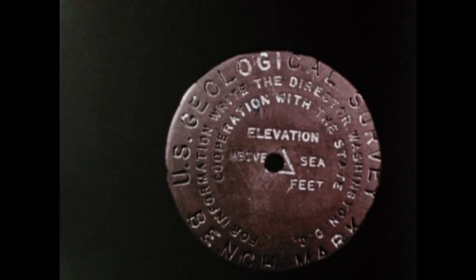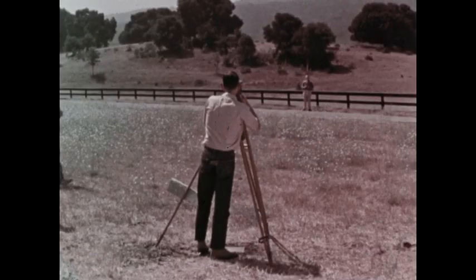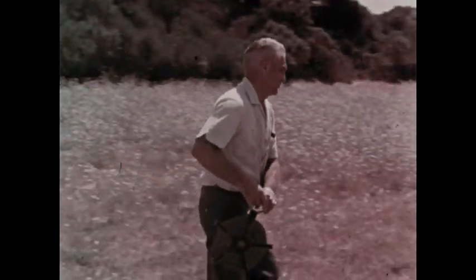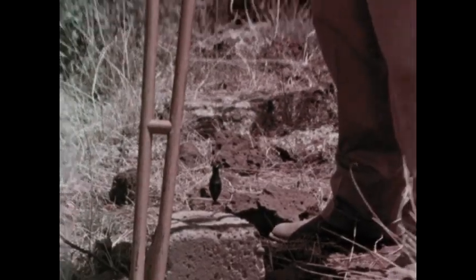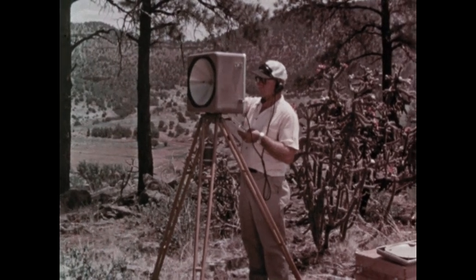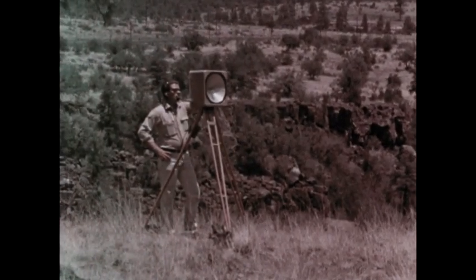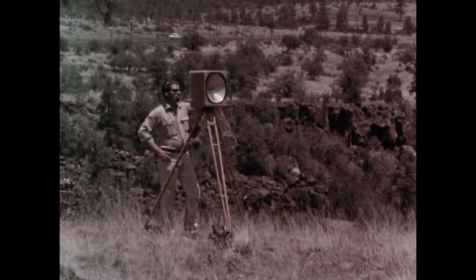The surveyor centers his instrument precisely over one of these known marks. From there, the distance to a proposed new point can be obtained. It can be measured physically with a special metal tape, or it can be measured electronically, a newer, faster, more accurate way to measure distances. This particular system directs a high frequency radio signal to a reflecting unit. This instrument bounces the radio signal back to the transmitter.